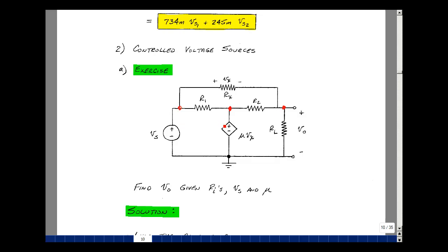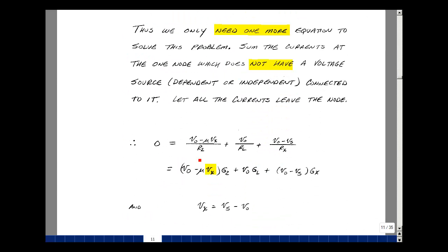So I can sum the currents at this node, this node, or this node. But these nodes have a voltage source hooked up to them. Although there are different kinds of voltage sources, the current that's in here is not with some type of a relationship like Ohm's law. So I can solve for this, but it's just another unknown. I'm going to sum the currents at this output node here. Let's just let the currents leave the node. So this current here is going to be Vout minus mu V sub X divided by R2. This current is Vout divided by R sub L. And this current here is Vout minus V sub S divided by R sub X.